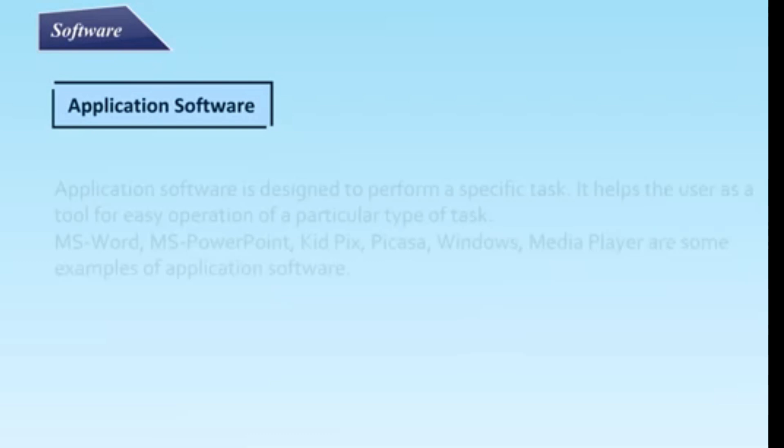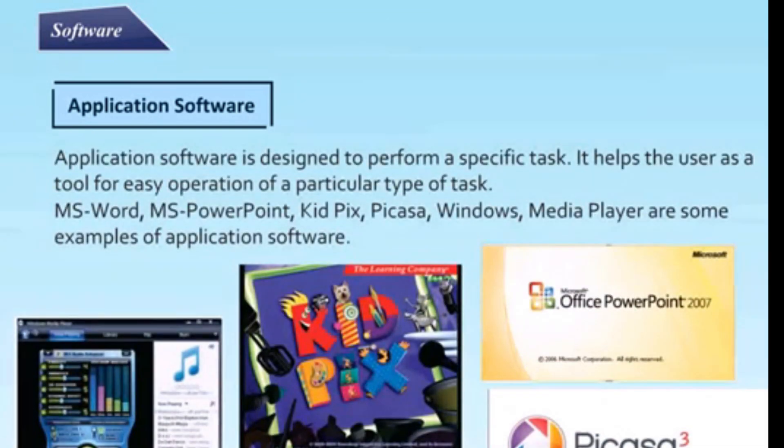Application software is designed to perform a specific task. It helps the user as a tool for easy operation of a particular type of task. MS Word, MS PowerPoint, KidPix, Picasa, Windows Media Player are some examples of application software.